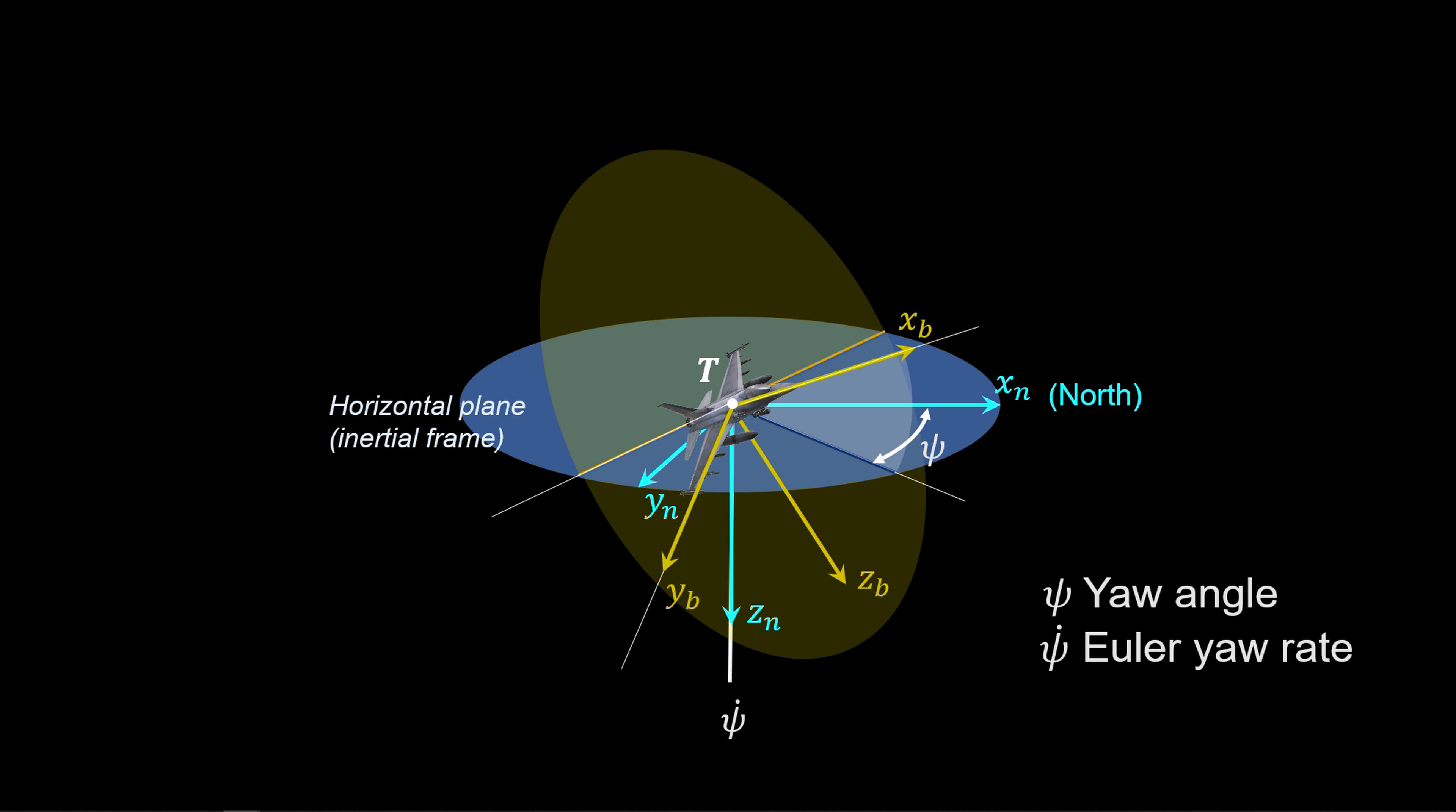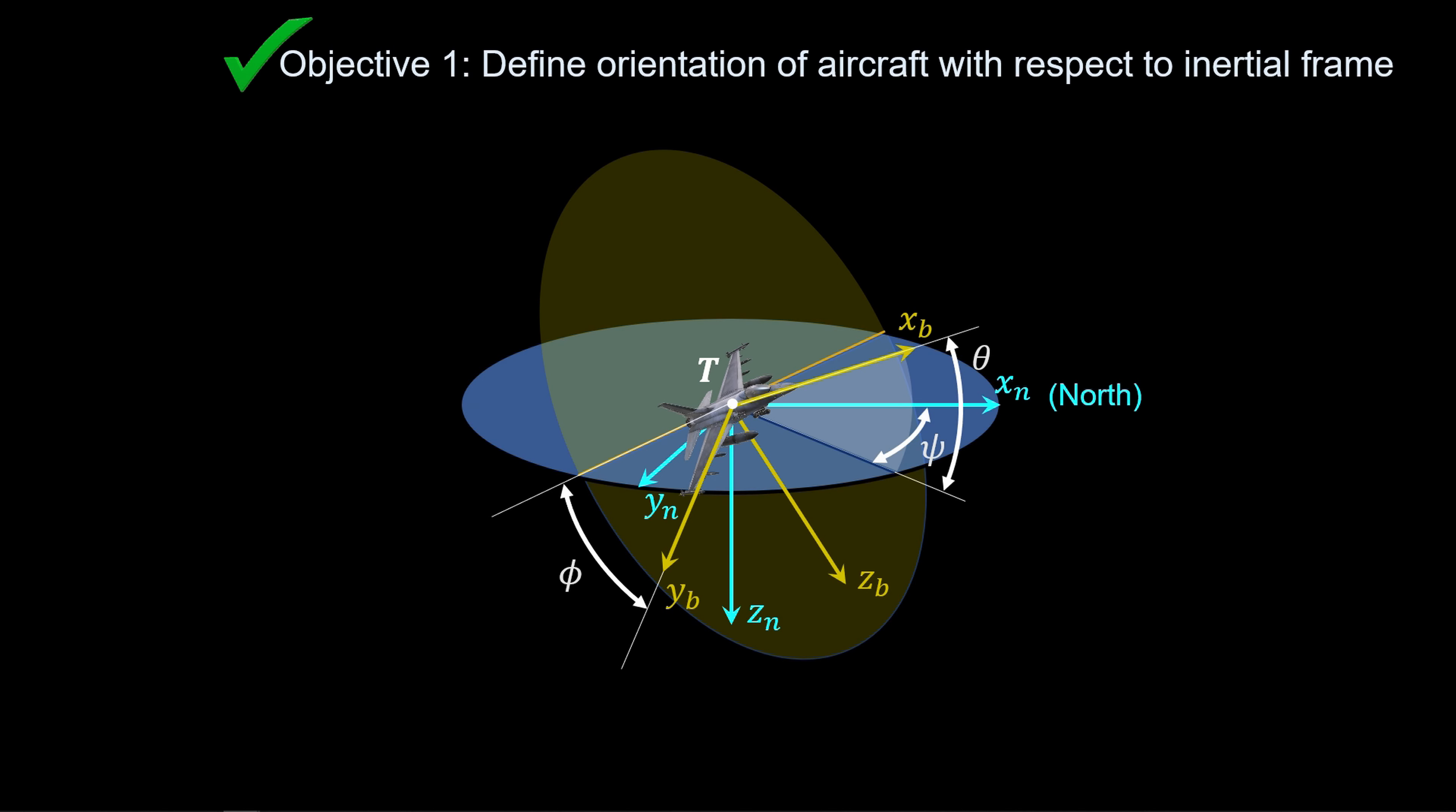To summarize, we have the Euler-yaw angle and Euler-yaw rate, the pitch angle and pitch rate, and the Euler-roll angle and roll rate. And having gone through this, we complete our first objective.